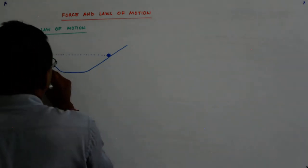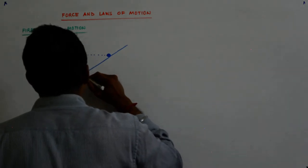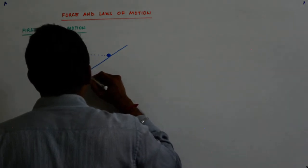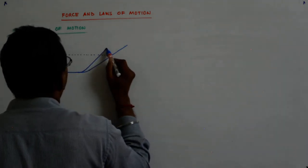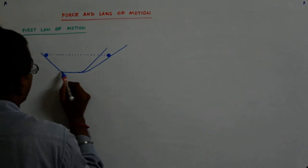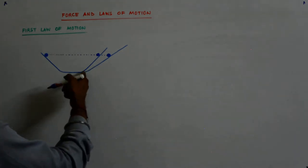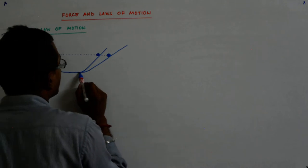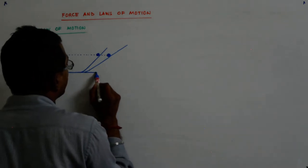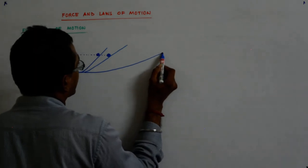Then suppose when these inclinations were the same. When these inclinations were the same, then what would happen? The distance travelled here and the distance travelled here would become equal. In this case the distance that it has travelled is more. Now he started making it flatter and flatter.